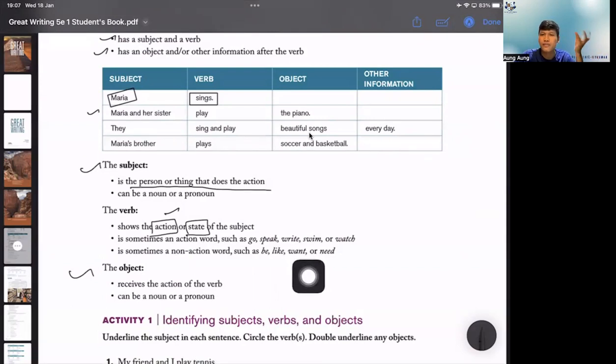Action verbs include: go, speak, swim, and watch. State verbs like 'want' and 'need' - for example 'I want to go home' or 'I need you' - these are statements, not actions.